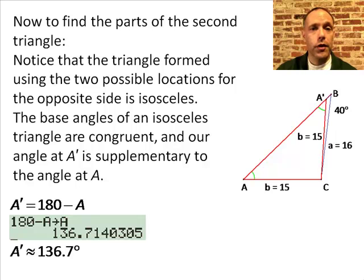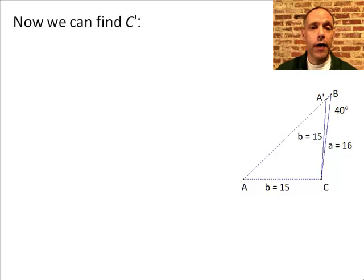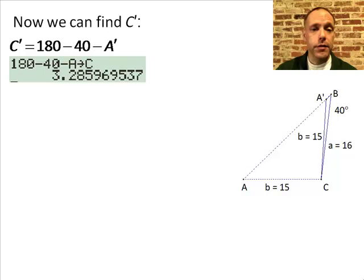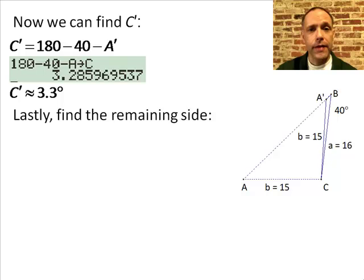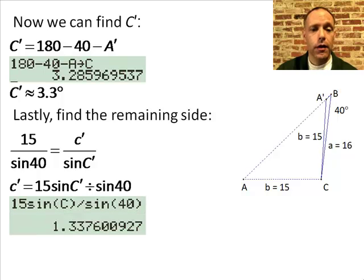I stored angle A prime in my calculator's memory because we'll be using it in the next part. Now we can find the measure of angle C prime. Remember the three angles of a triangle add up to be 180, so angle C prime is about 3.3 degrees. This has also been stored in calculator memory. Lastly we find side c prime — set up the proportion using the law of sines and solve for c prime. Side c prime is about 1.3.